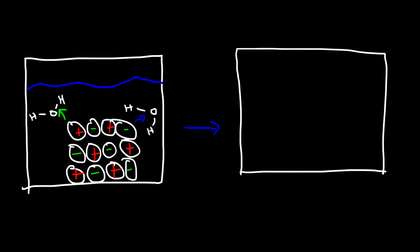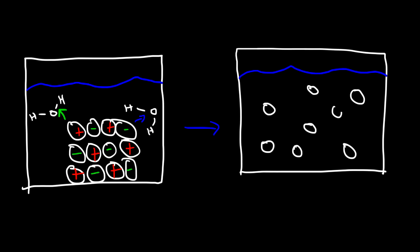We're still going to have the same number of ions — water just pulls all of them apart. All of the sodium ions are now separate from each other, and all of the chloride ions are separate from each other. That's what happens when an ionic compound dissolves in water: the crystal breaks apart and separates into positively and negatively charged ions.